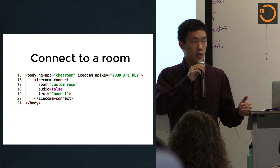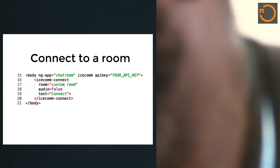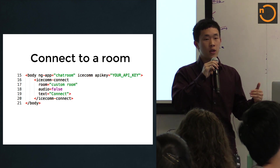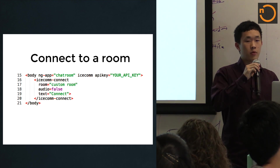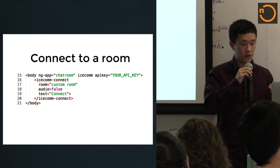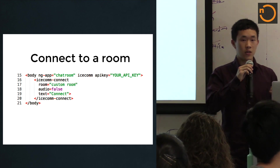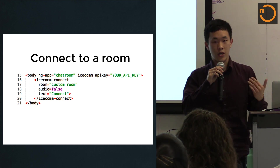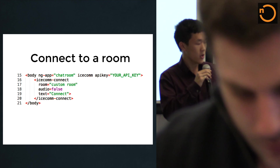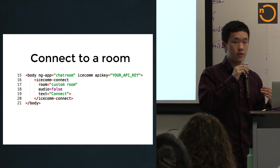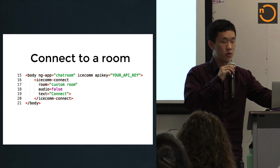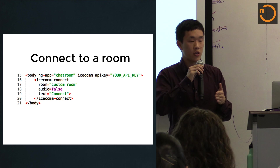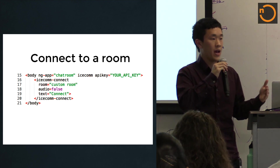The way Icecom works is similar to Sockets — it's a room-based system, meaning you join a room, and if there are other peers in there, it fires an event handler that gets you their video streams. There are four steps involved. The first is to connect to a room using the Icecom-Connect directive. It has a room attribute you can customize, and your API key can link you to multiple rooms. You can specify whether you want audio or video — we specify audio as false because there might be feedback issues. The directive renders a button that allows you to connect to a room.